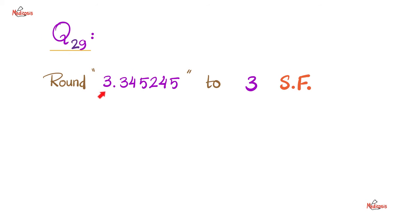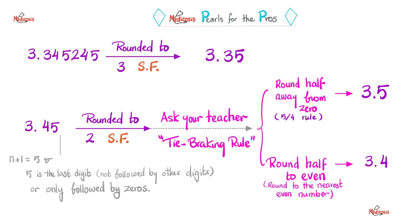Yet another question: round this number to three significant figures. Here is 1, here is 2, here is 3 — look after: it's 5. I round up. It becomes 3.35. So this number, rounded to three significant figures, becomes 3.35.